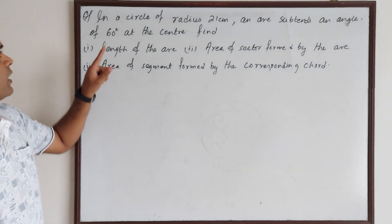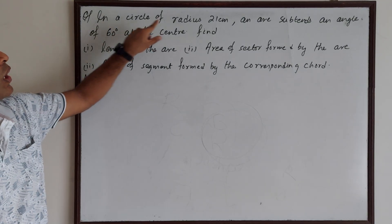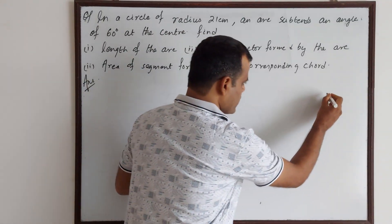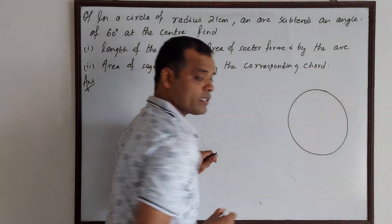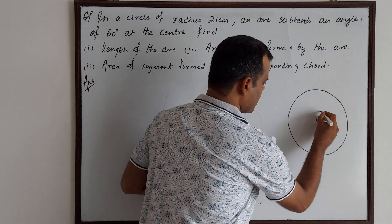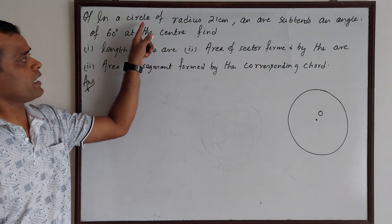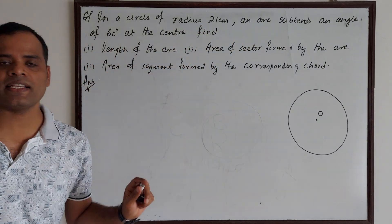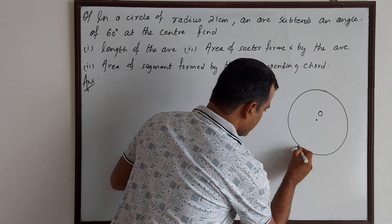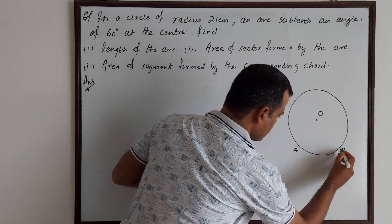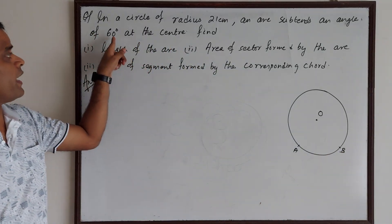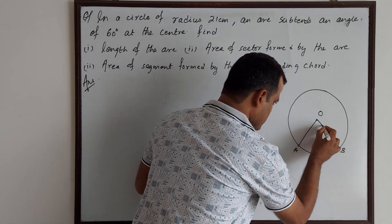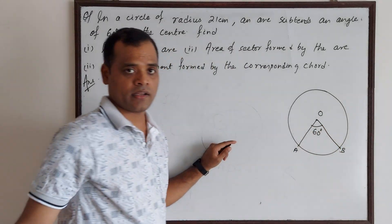Let us draw a figure. In a circle of radius 21 cm, an arc subtends an angle of 60 degrees at the center. We draw a circle, let this be the center O. The circle is of radius 21 cm, and some arc is subtending an angle of 60 degrees at the center. Let us assume AB is an arc which is subtending 60 degrees at the center of the circle. Now the question is clear.